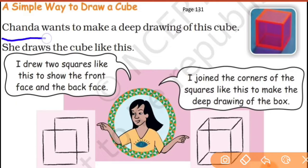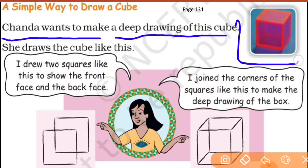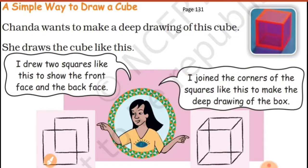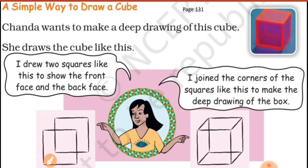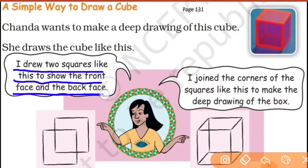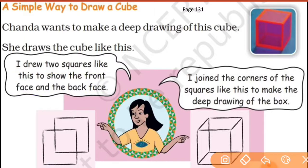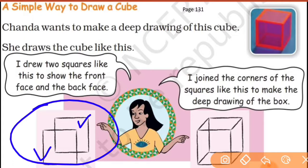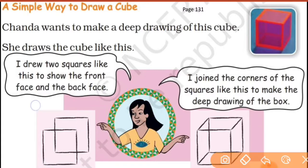Let's read: Chanda wants to make a deep drawing of this cube. You can see the cube here — a shape is made, and Chanda wants to make a deep drawing of it. The first step is drawing two squares to show the front face and the back face. In a cube, there are total six faces — front, back, top, bottom, left, and right. The faces are square-shaped because in a cube you have only square faces.